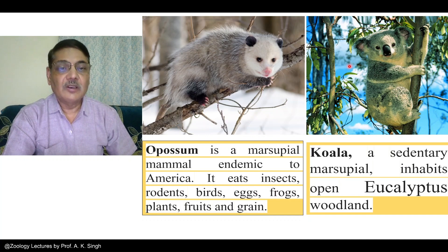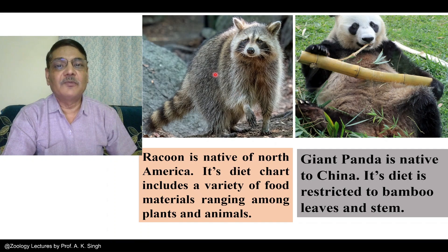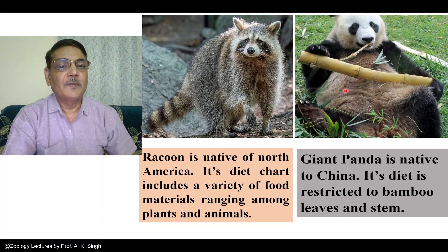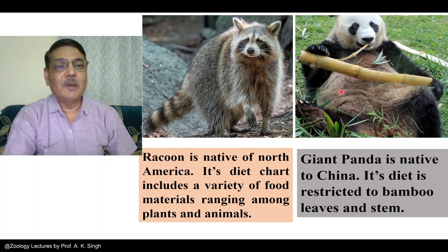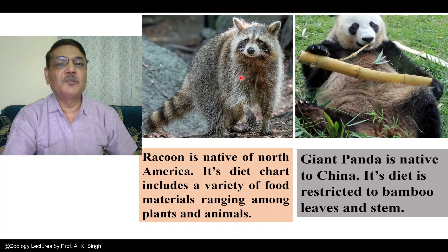Another example is of raccoon. The raccoon on the left side is native to North America and its diet consists of a variety of food materials like plants and animals, so it is also an omnivorous animal. The right one is a giant panda, which is native to China and feeds on a restricted diet — bamboo leaves and stem. These are two eutherian mammals but they have variations in their distribution pattern as well as the type of food they consume, so accordingly they are considered generalist or specialist species.